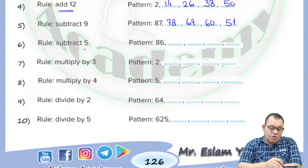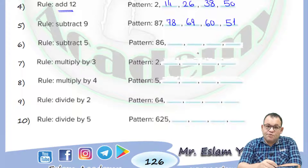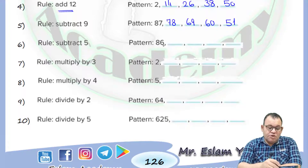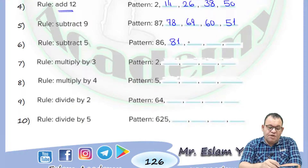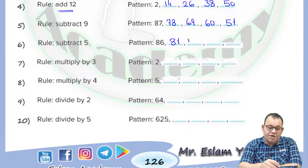Now in question number 6 we need to subtract 5 from each number. Just 86 minus 5, it will be equal to 81. Minus 5 it will be equal to... minus 5 it will be equal to 66.